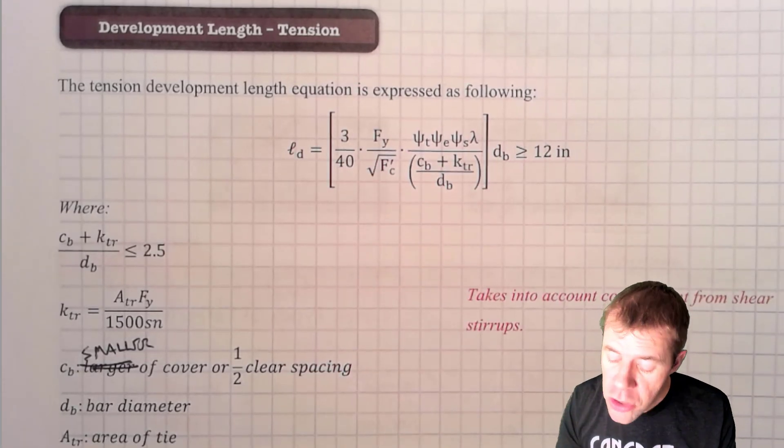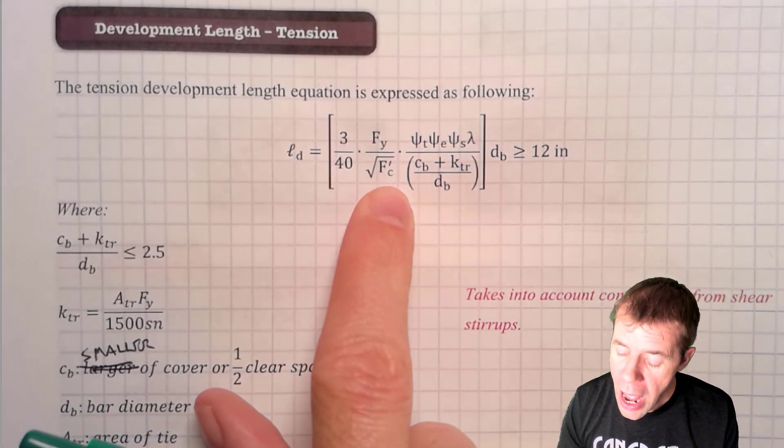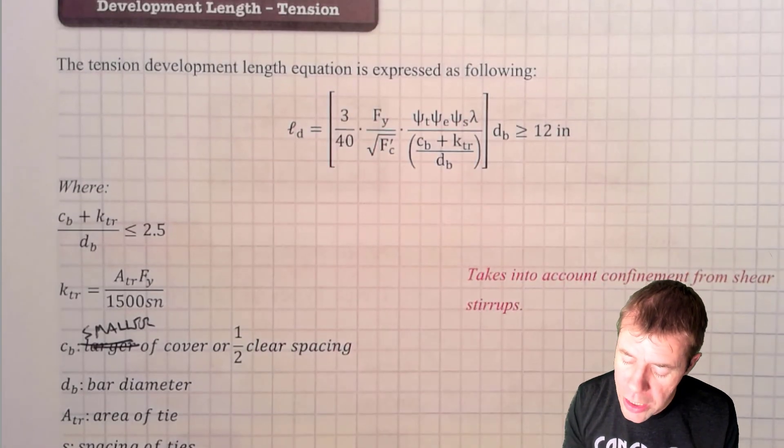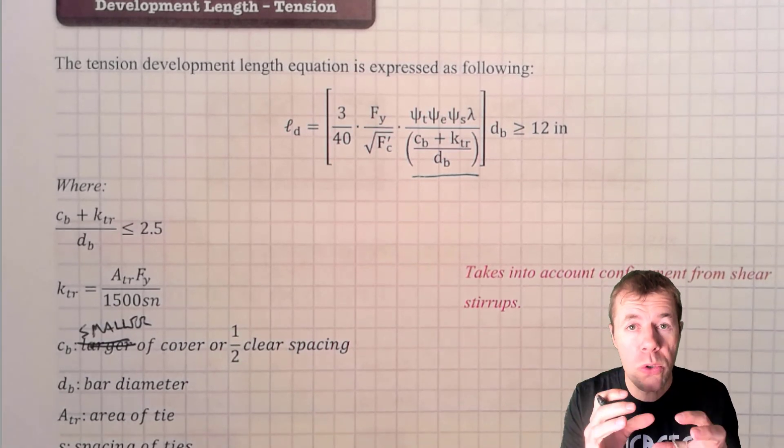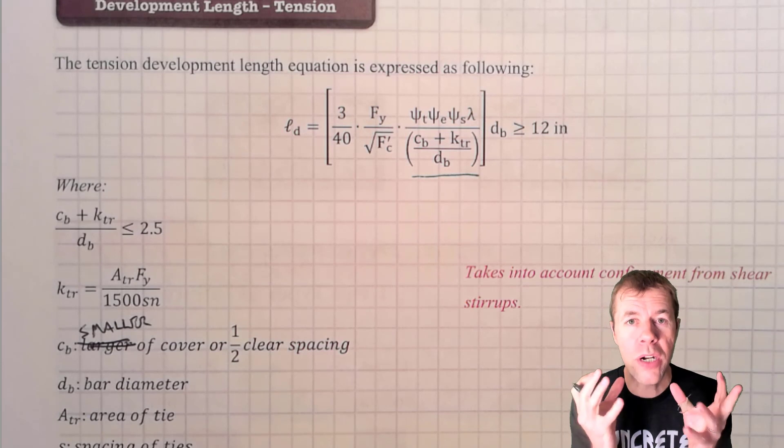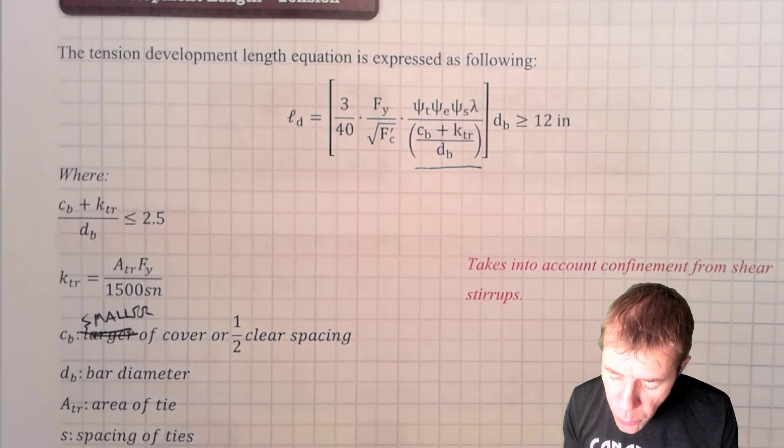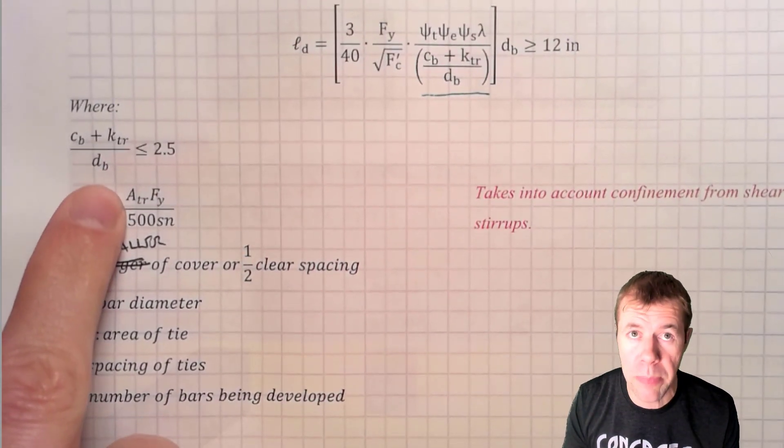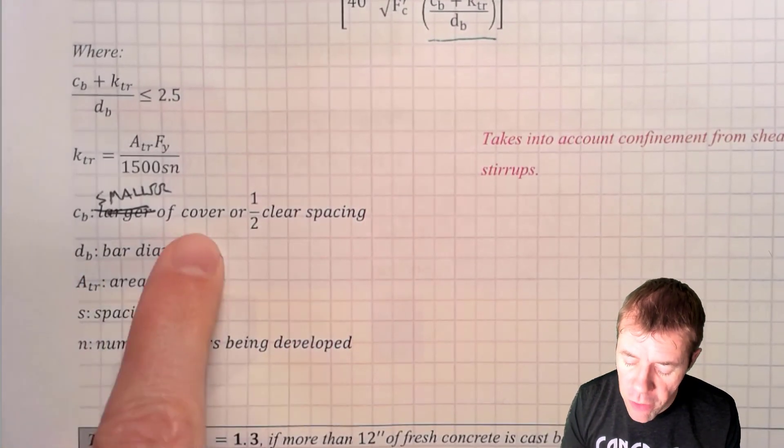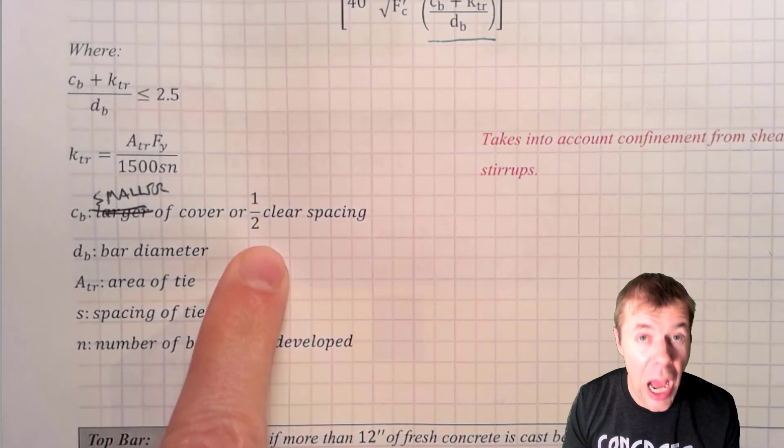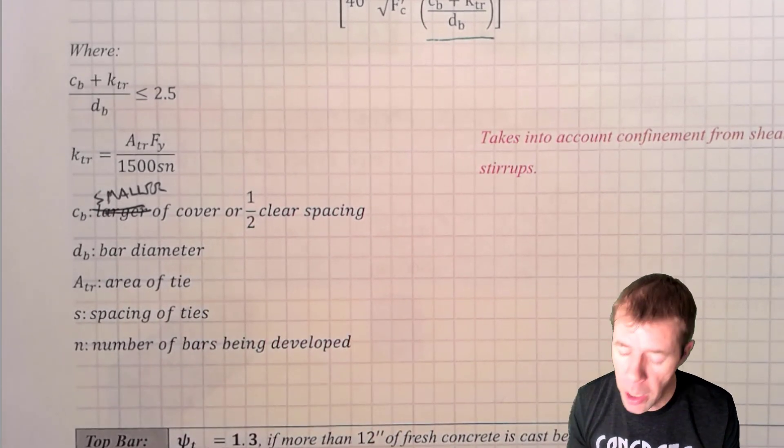Now there's lots of terms in here. Some of these are constants. Like the strength of your steel. Like the strength of your concrete. And then there is this term right here. The C sub B plus KTR divided by dB. That takes into account how close you are to the outside. And also how confined your bar is that you're trying to develop. What am I talking about? Well, you have this C sub B plus KTR over dB. It has to be less than 2.5. Your C sub B, that is the smaller of the cover of your steel or one half the clear spacing. I'll work an example problem coming up and that will make more sense. That is that closest distance that I talked about before.